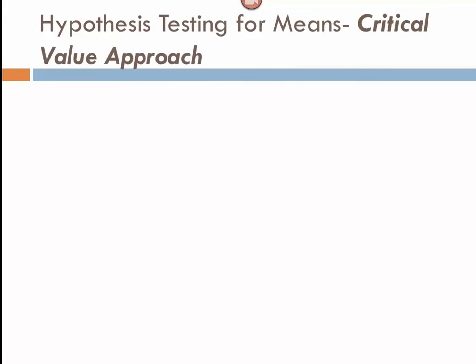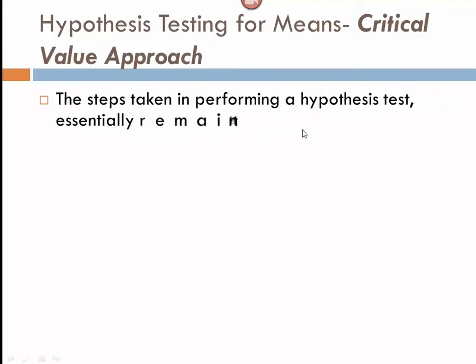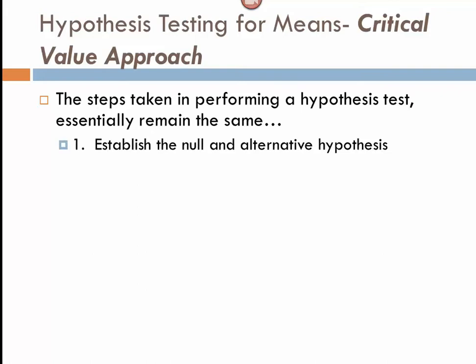When we run hypothesis tests for means, the approach is basically the same. Using a critical value approach, we first establish the null and alternative hypothesis. The null will always be an equal to, and the alternative will either be not equal to, less than, or greater than, depending on the wording of the question.